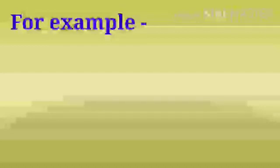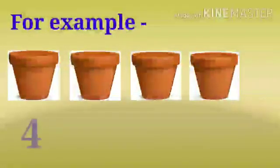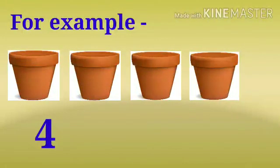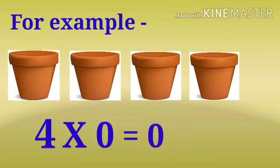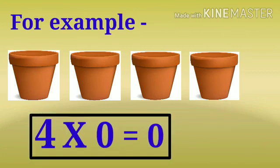For example, there are four flower pots but there is no flower in any flower pot. Now how many flowers are there all together? Yes, there are zero flowers. So four into zero is equal to zero.